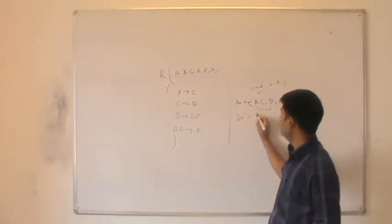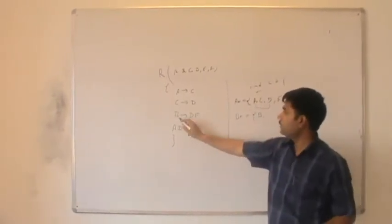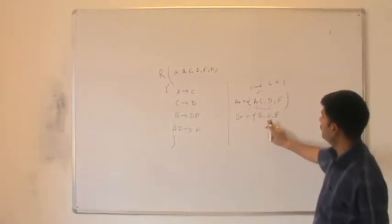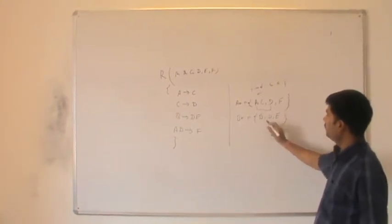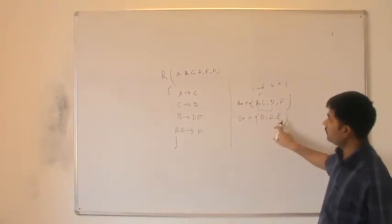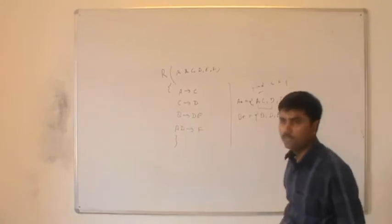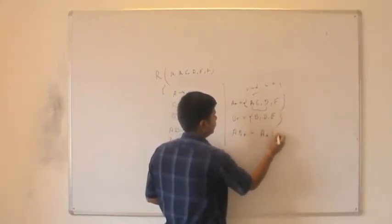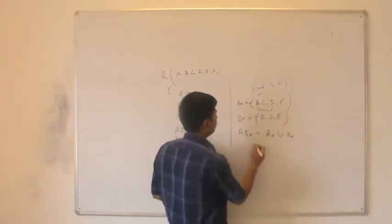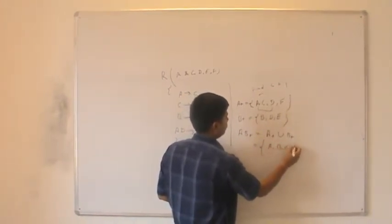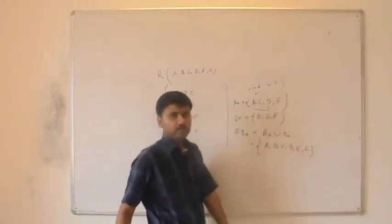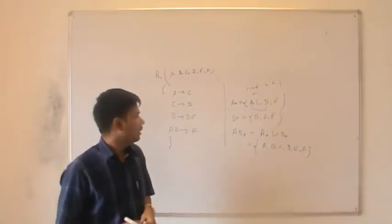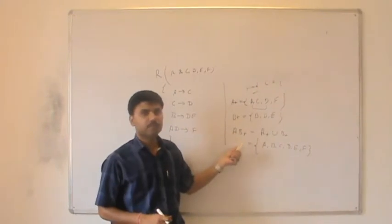Taking the closure of AB: the union of A+ and B+ gives A, B. Then using AB we can determine C and D, and from AD we can reach F. So AB+ = {A, B, C, D, E, F}, which contains all attributes of relation R. This means all attributes are reachable from AB.